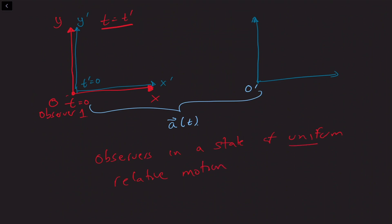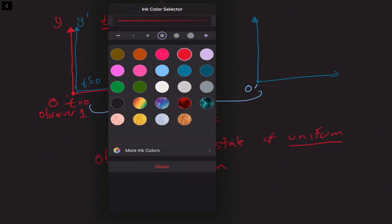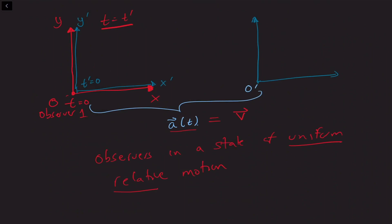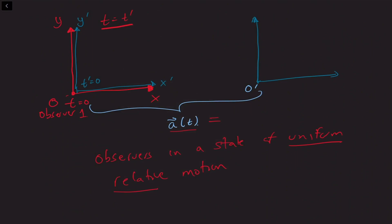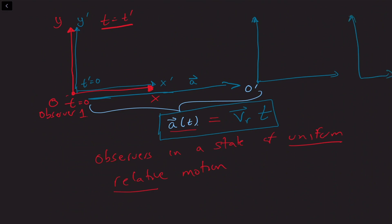By uniform relative motion, what we mean is we won't assume that a bar is any arbitrary function of time, which means that the second set of coordinates is not moving in an arbitrary jerky way. Rather, it is a constant vector — let's call it V relative — times time. In this case, I've taken V relative to be along the x-axis. So this displacement a bar is changing with time, and as time passes this origin will move further and further to the right.